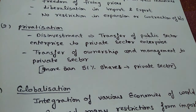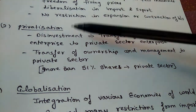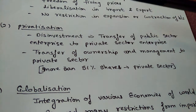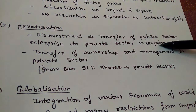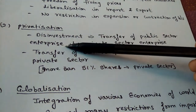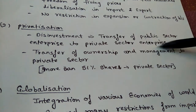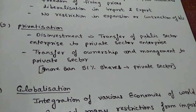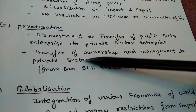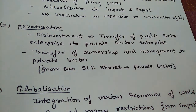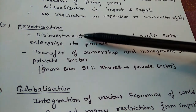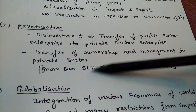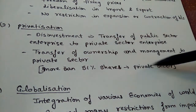After liberalization comes Privatization. This involved disinvestment — the transfer of public sector enterprises to private sector enterprises, including the transfer of ownership and management to private hands. The condition for this was that if 51% of shares in any industry, firm, or organization are held by private hands, ownership and management transfers to the private sector.